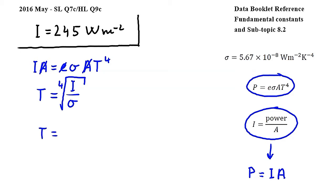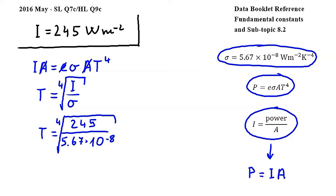Substituting gives us 245 divided by the Stefan-Boltzmann constant, which can be found in the fundamental constant section of the data booklet, and which is equal to 5.67 times 10 to the power of negative 8, and this fraction is under the fourth root. Carrying out this calculation gives us approximately 256 Kelvin for the surface temperature of the Earth.